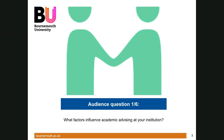We've got six questions for you today. We'd like you to put answers in the chat as we go through. Our first question is: what factors influence academic advising at your institution? Interestingly, at our institution, when it was more informal it seemed to work better than when we had a huge central formal policy — do you have academic advising policies?